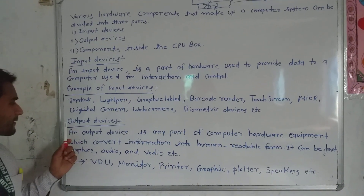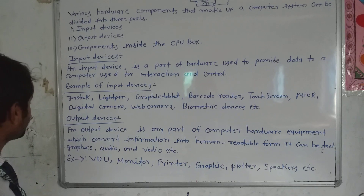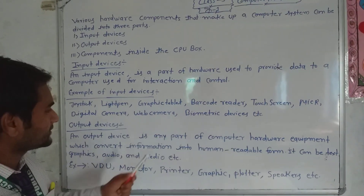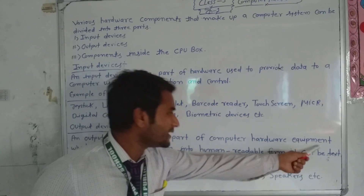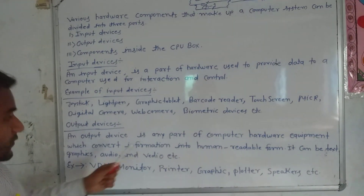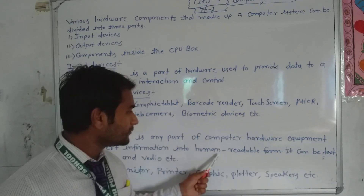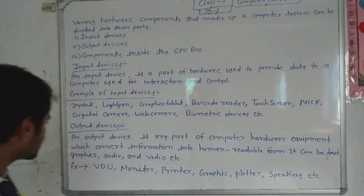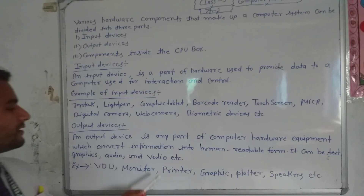Let's see output device. What is an output device? An output device is any part of computer hardware equipment which converts information into human readable form. It can be text, graphics, audio, etc.